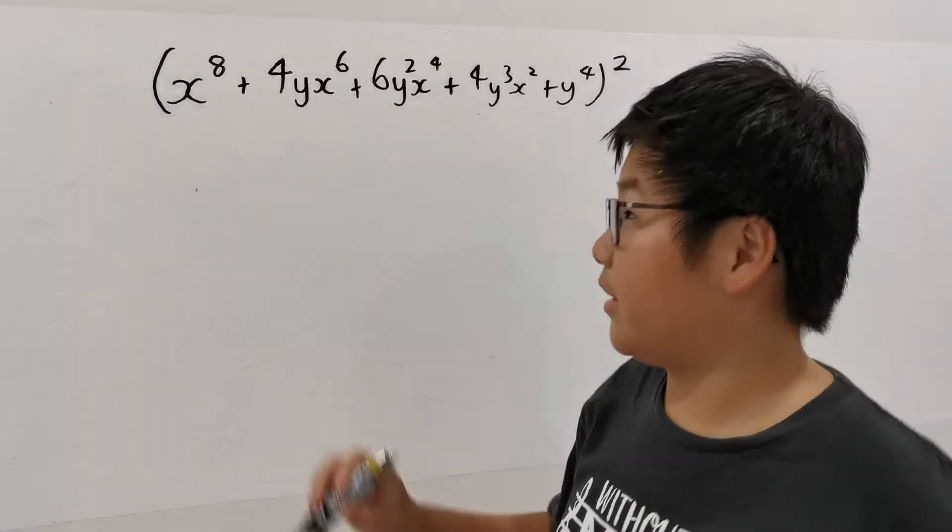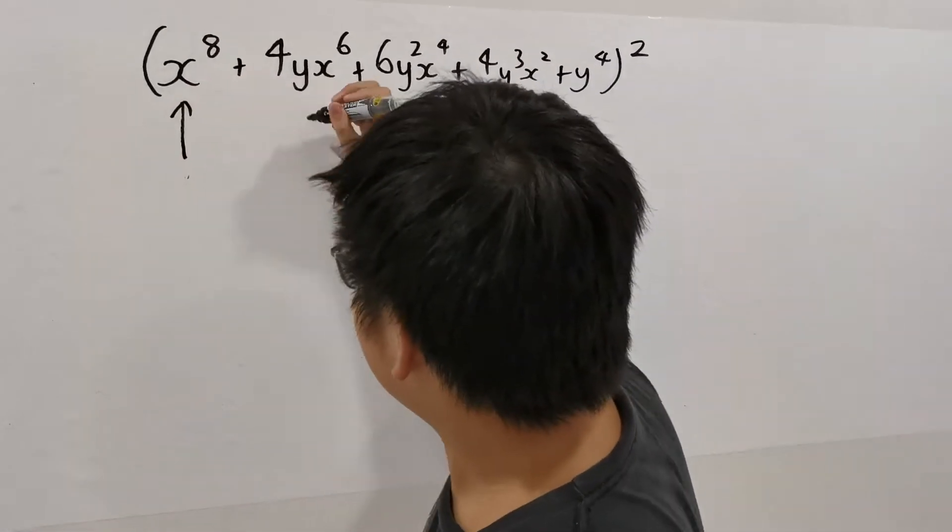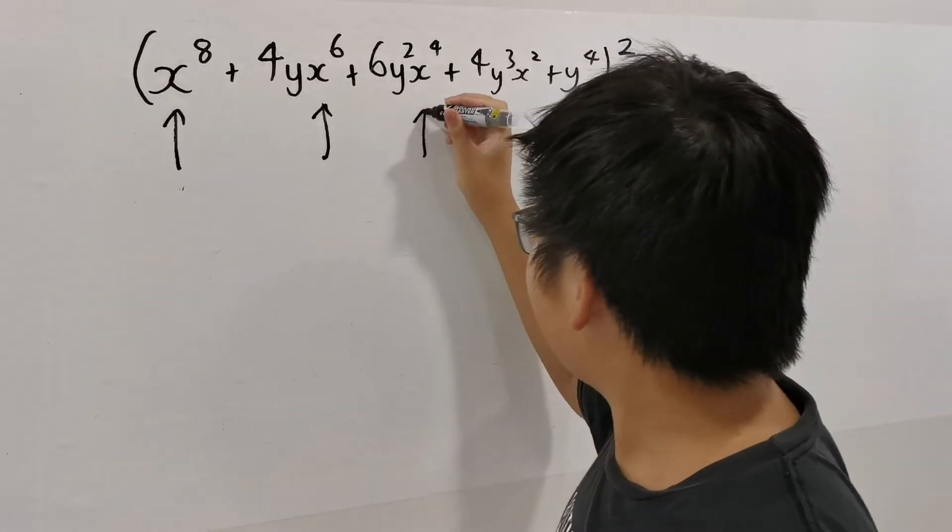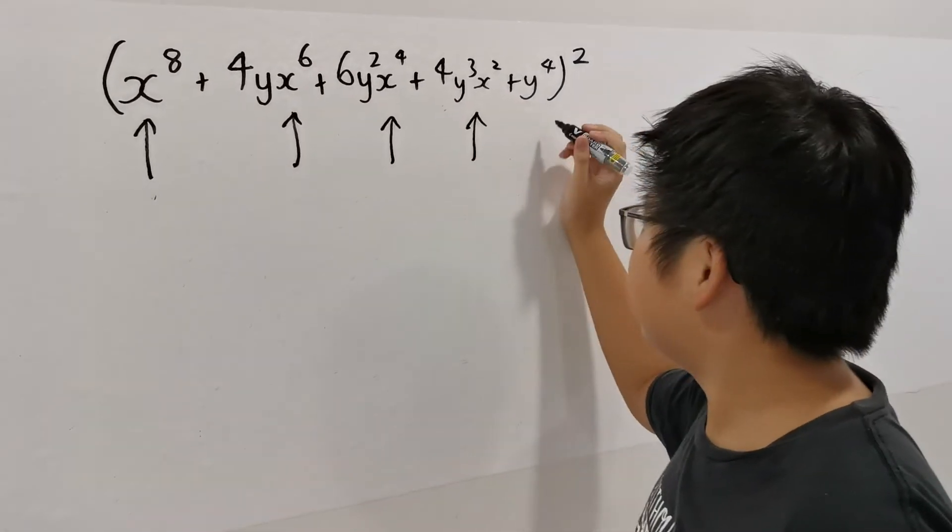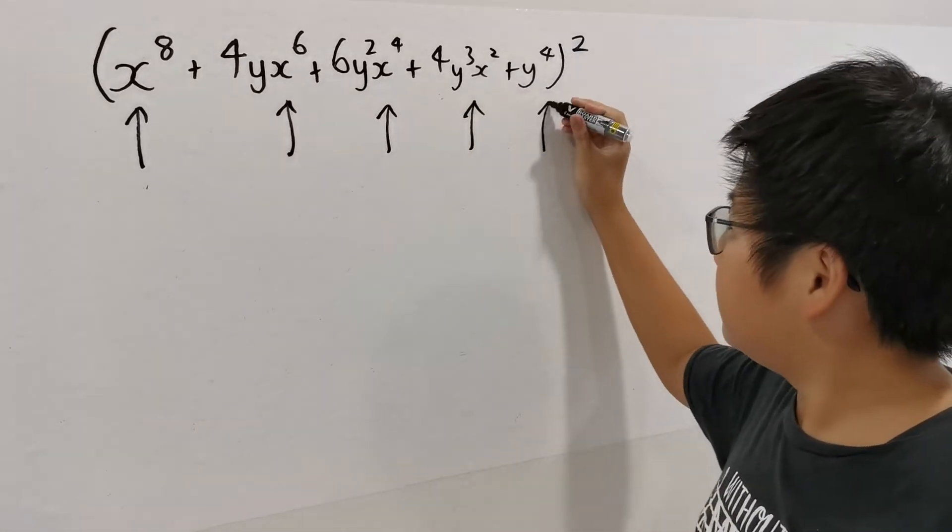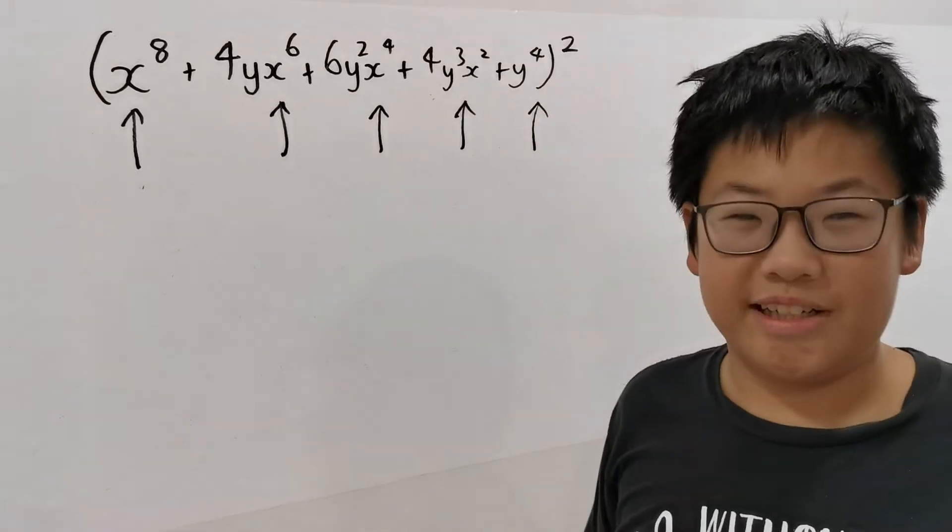But look, look at this. x8, x6, x4, x2, x0. That's interesting, isn't it?